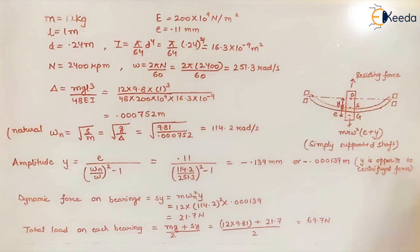We write all the data that is given: mass of the rotor, the length of the shaft, E modulus of elasticity, eccentricity small e, and the diameter of the shaft. The moment of inertia of shaft is I = π/64 × d^4. We place the value of d and this is the value of I that we get.